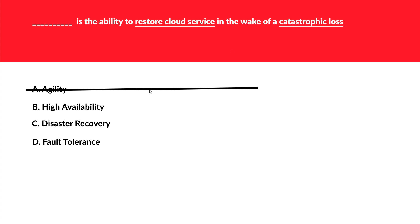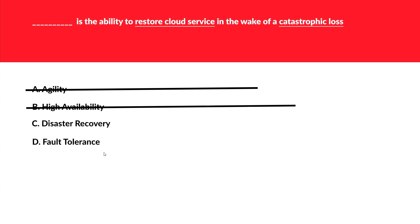High availability is again not related to catastrophic loss and not related to restoration, so B is also wrong. C is disaster recovery — yes, this looks to be correct because it is related to catastrophic loss and also related to restoring cloud services. We'll keep this option aside for now. Last is fault tolerance. Fault tolerance is like a lower version of high availability; in high availability we maintain the SLA.